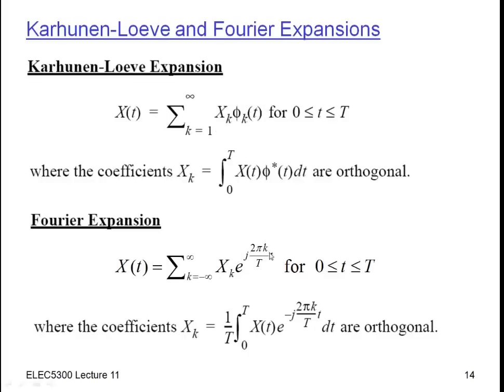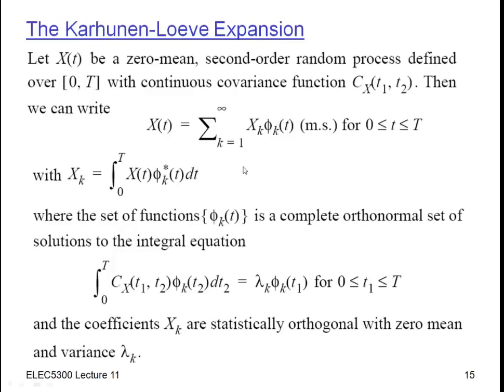The only difference is I've replaced this complex exponential here with another function, phi sub k. I don't tell you what the phi sub k are, just some functions, but there's nothing random about these, just like there's nothing random here. So all the randomness in X(t) is captured in these coefficients X sub k, which just as in the Fourier case, you can show they're orthogonal. And you can compute them with a very similar equation. Here I took the integral times e to the minus j omega, or the complex conjugate of this, and I do the same thing here with X phi sub k.